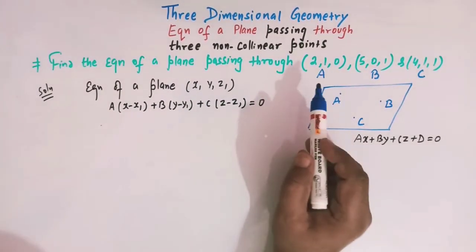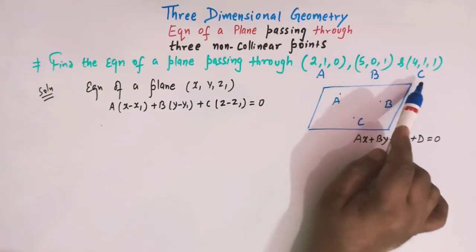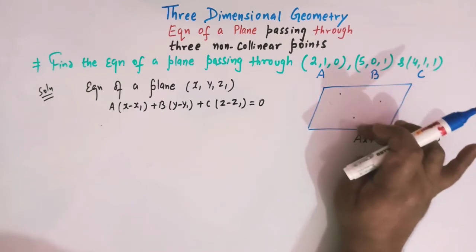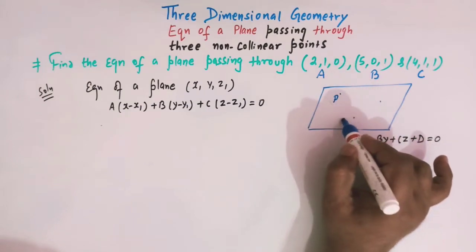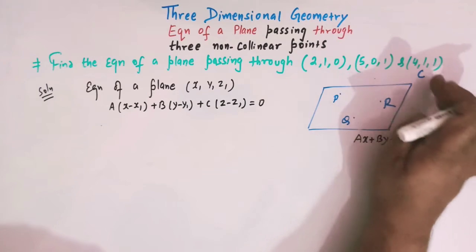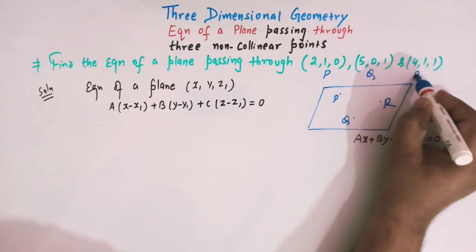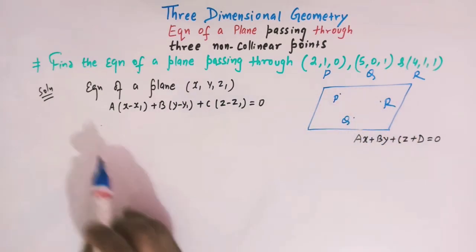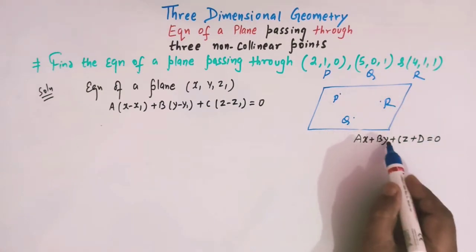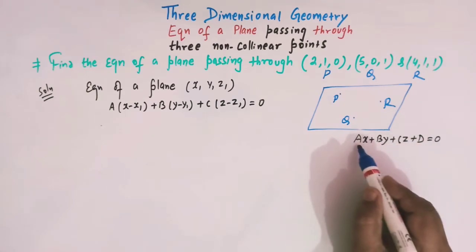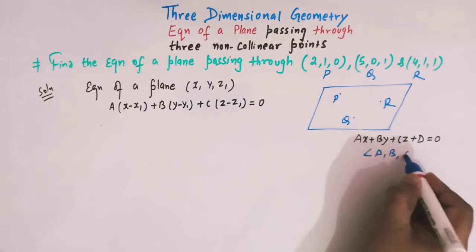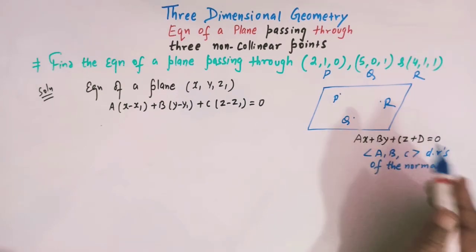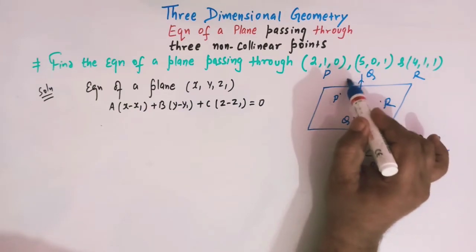We are using the letters A, B, C for both the points and the coefficients, so let us rename the three points as P, Q, and R to avoid confusion. We have these three non-collinear points and we have to find the equation of the plane passing through them. The general equation of a plane is ax + by + cz + d = 0, where a, b, c are the direction ratios of the normal to the plane.